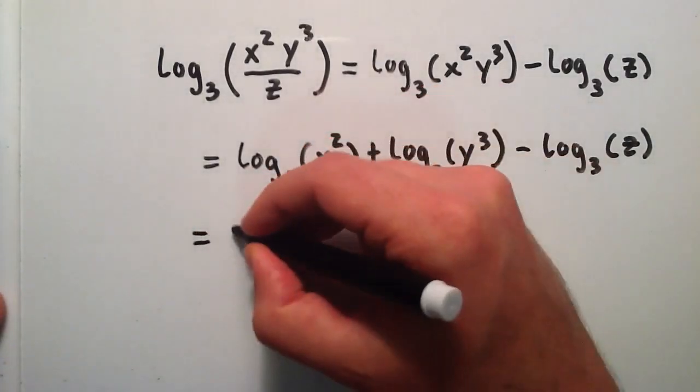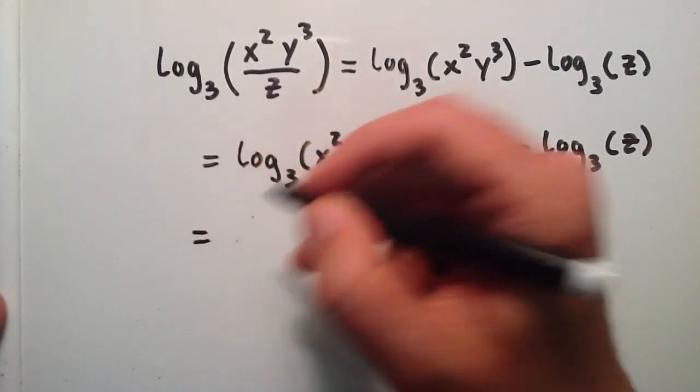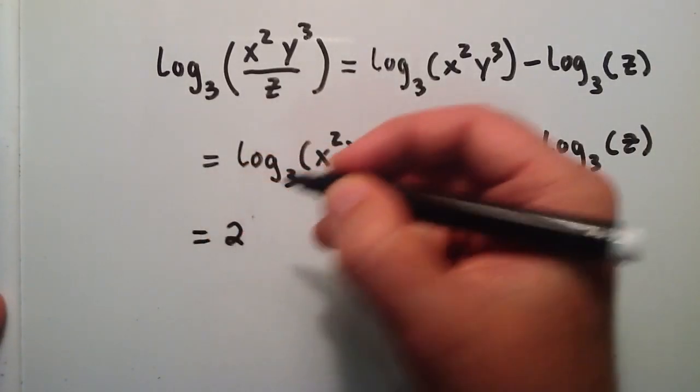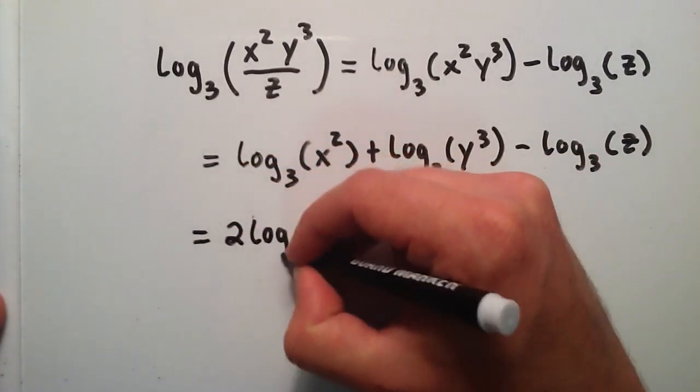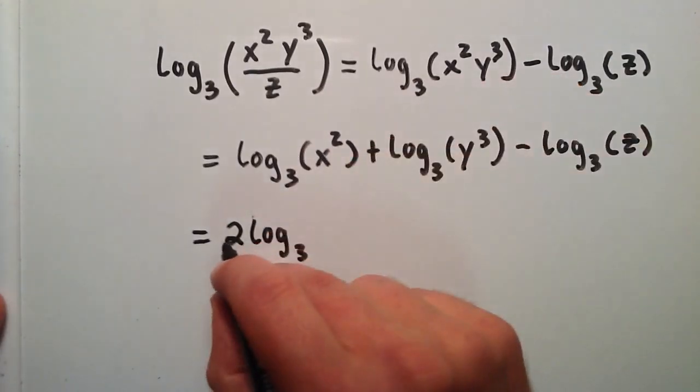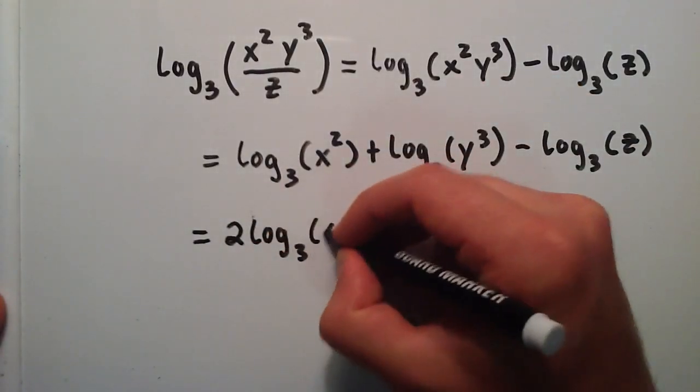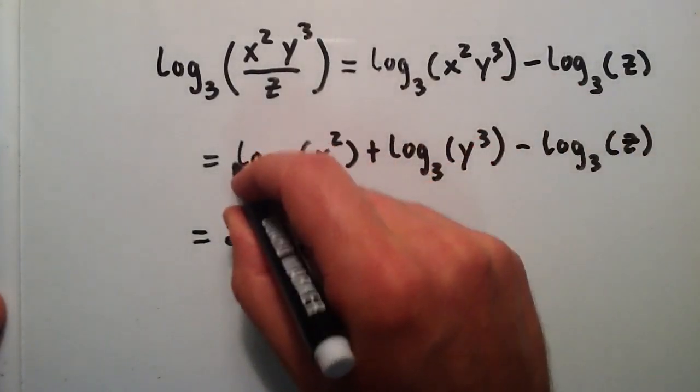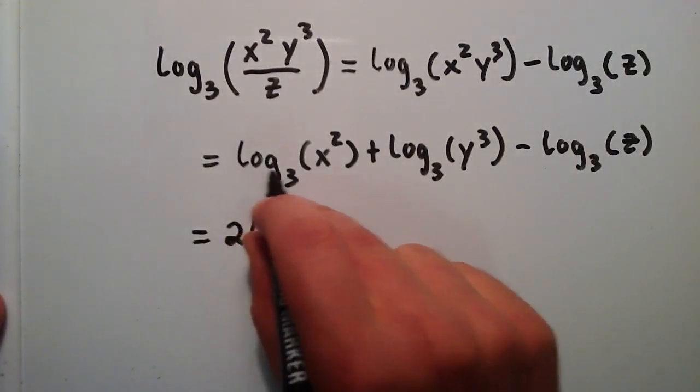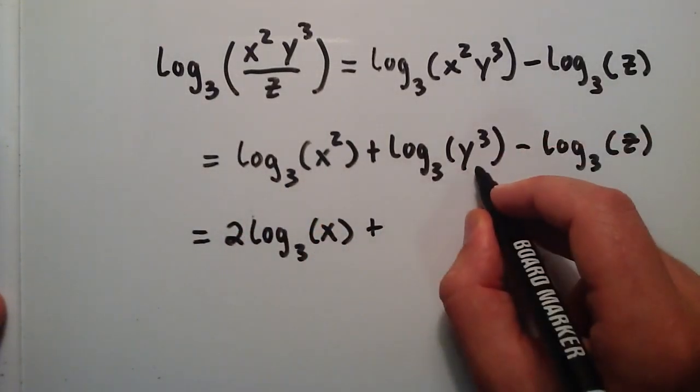So this is equivalent to bringing the 2 out front and then just writing the rest. So this is equivalent to 2 log base 3 of x. We just move the 2 out front and everything else stays the same.